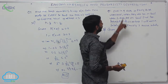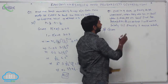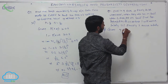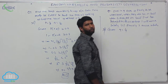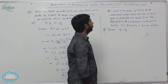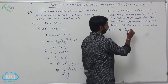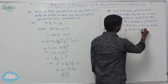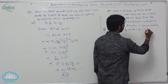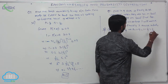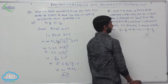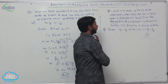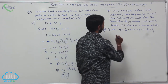Given: 1 in 9 ships is likely to be wrecked means Q is equal to 1 by 9. It implies P is equal to 1 minus Q, which is equal to 1 minus 1 by 9, equal to 8 by 9. So P is equal to 8 by 9. Given N equal to 6.